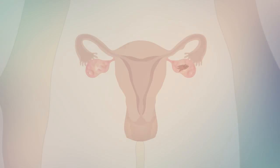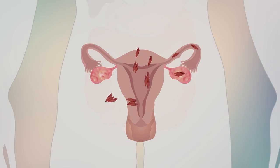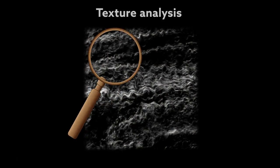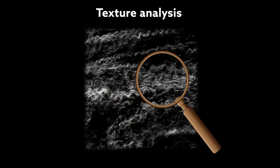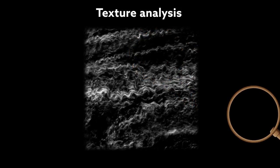This is particularly important because ovarian cancer is highly lethal and is rarely detected before it has spread throughout the body. The group previously used texture analysis to look at two-dimensional images of ovarian tumors to learn how advanced the cancer had become.